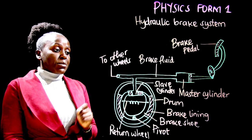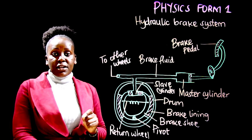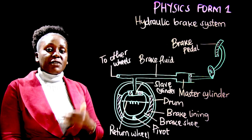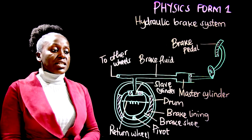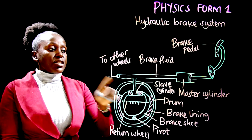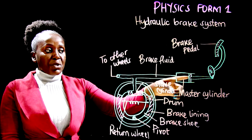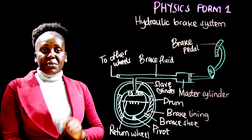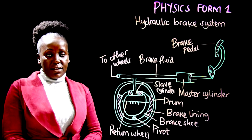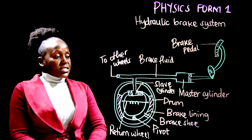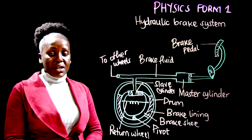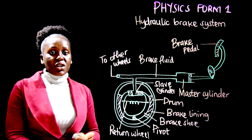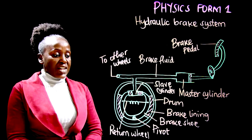All you need to remember is that the wheels operate on the principle of Pascal, and all four wheels have the same thing happening at the same time because they are all connected to the master cylinder. When pressure is applied, it is transmitted to all the wheels at the same rate and in equal measure. That is what happens when braking a car. To resume motion, the opposite happens.